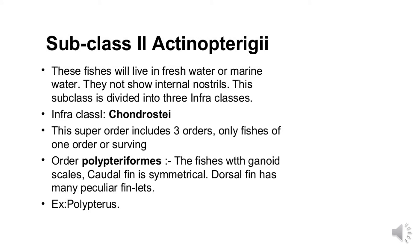Subclass Actinopterygii species live in freshwater and marine water. Internal nostrils are absent. This class is subdivided into three infra-classes. The first infra-class is Chondrostei. This super-order includes three orders, but only fishes of one order are surviving — Polypteriformes — fishes with ganoid scales. The caudal fin is symmetrical and the dorsal fin has many peculiar finlets. An example is Polypterus.